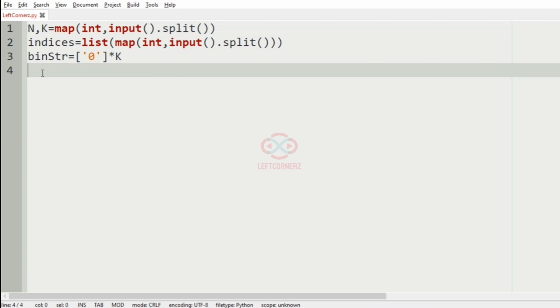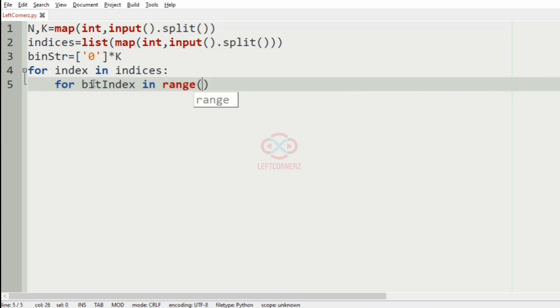So binary string is zero into k. And after that we have to iterate over the index in the indices. So we'll iterate from the index to the binary string and we have for the bit index in range.